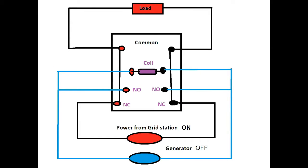How it works. When the generator is turned off the relay is also turned off because the relay coil is energized from the generator power. Thus the load is connected to the grid station.